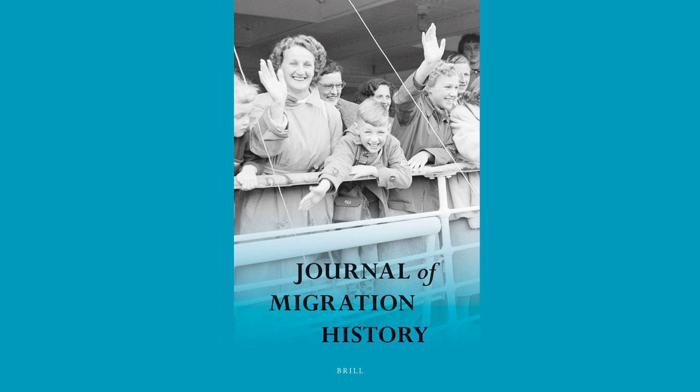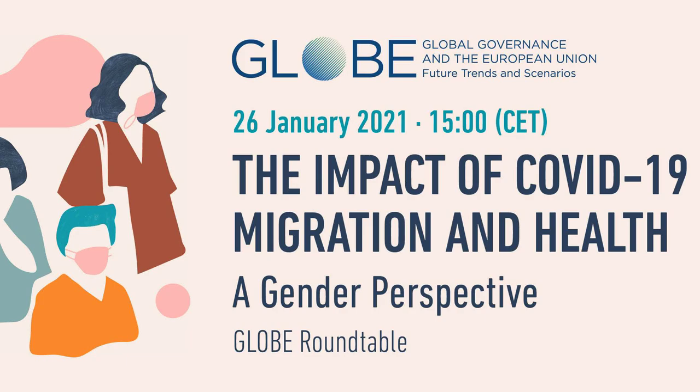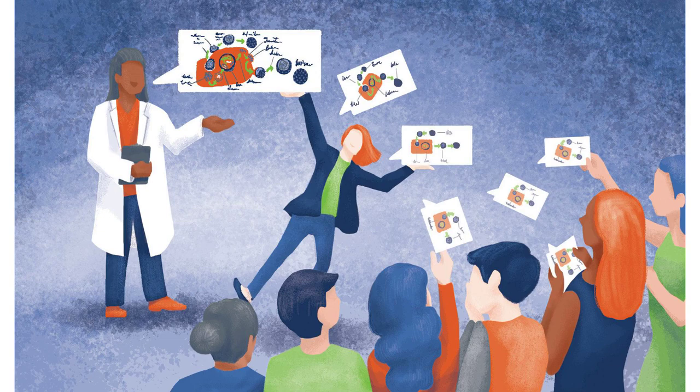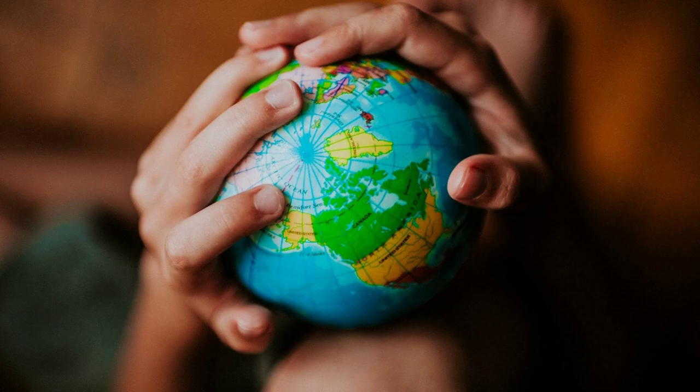Welcome to the third segment of our series on cultural history and the role of migration. In this segment, we will delve into the impact of migration on language and literature. Language is a fundamental aspect of culture, serving as a means of communication and a repository of collective knowledge. When people migrate, they bring their languages with them, leading to the spread and evolution of linguistic diversity.